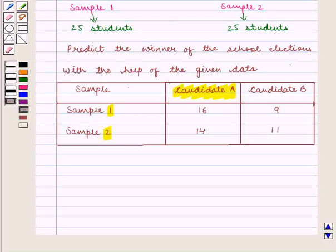As we can see, in sample 1, 16 students voted for candidate A and 9 students voted for candidate B. Similarly, in sample 2, there are 14 students who voted for candidate A and 11 students voted for candidate B.